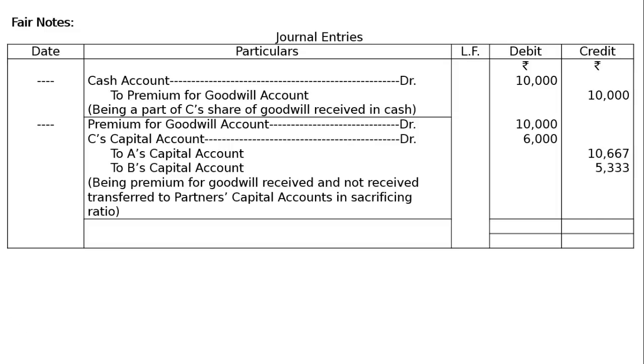To A's capital account rupees 10,667, to B's capital account 5,333. Being premium for goodwill received and not received, transferred to partners' capital accounts in sacrificing ratio.